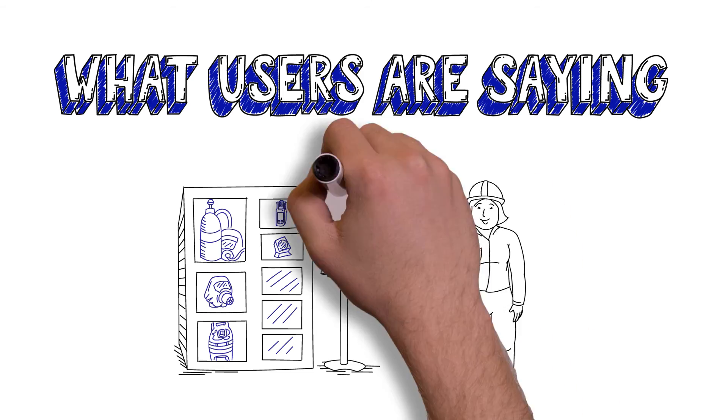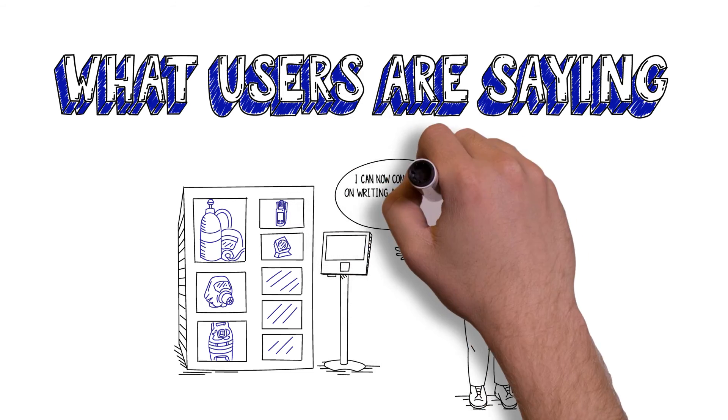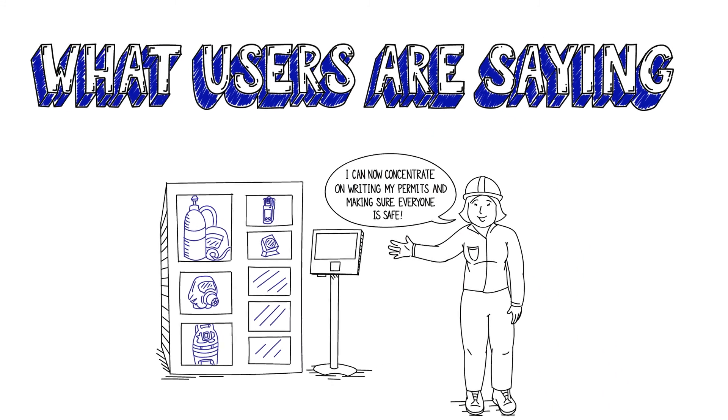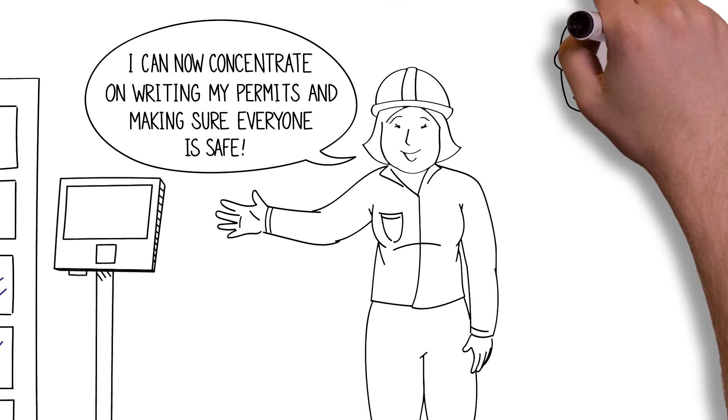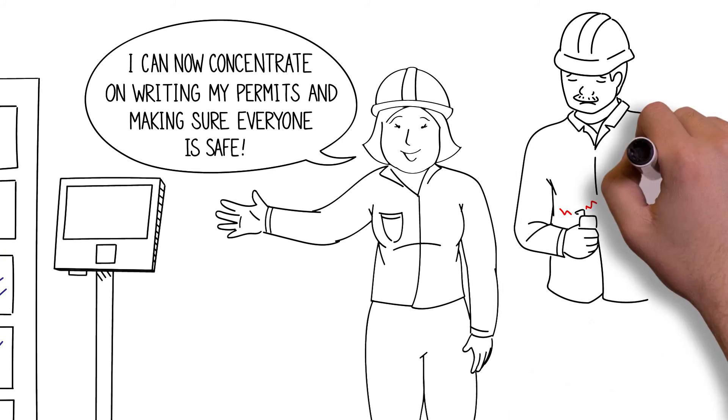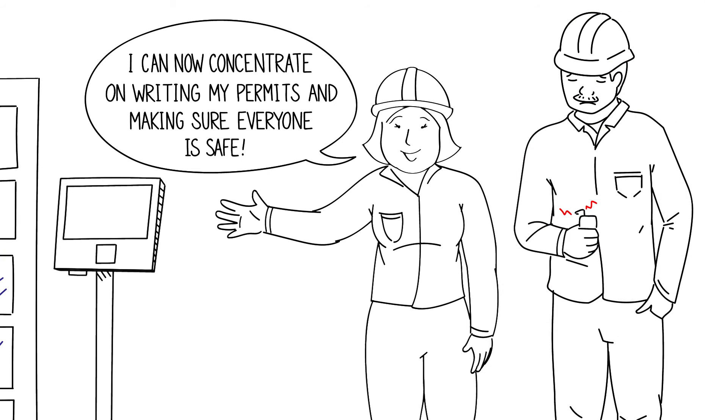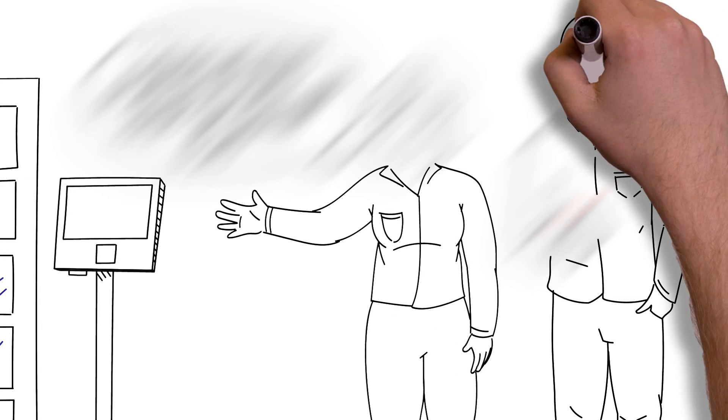One operator commented, I can now concentrate on writing my permits and making sure everyone is safe since the Rental Robot helps keep operators focused by eliminating multiple equipment requests or the need for switching out disabled equipment.